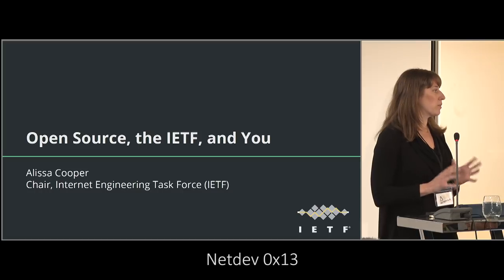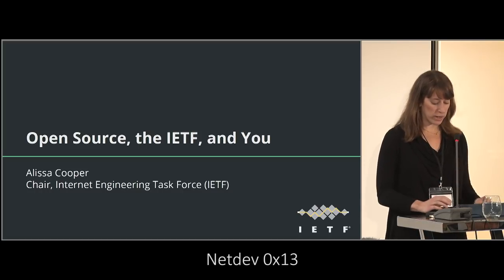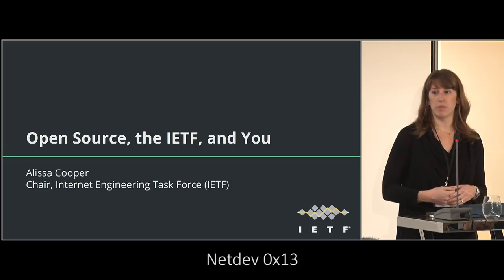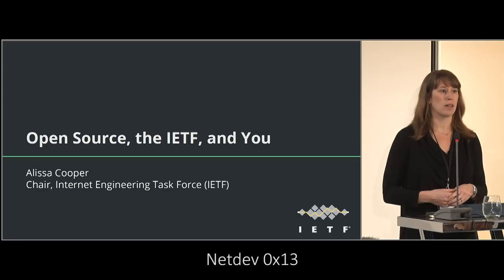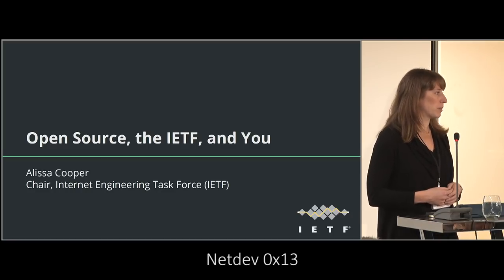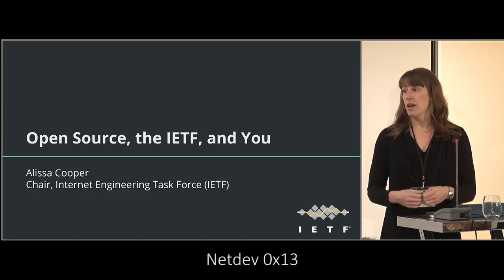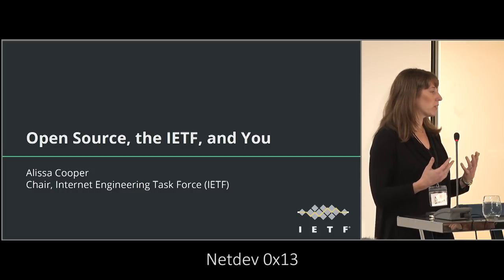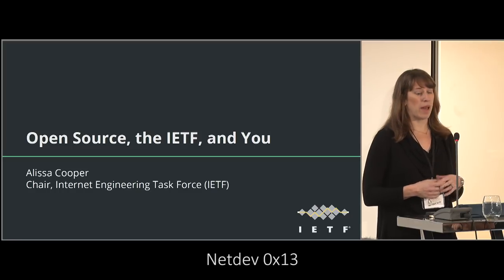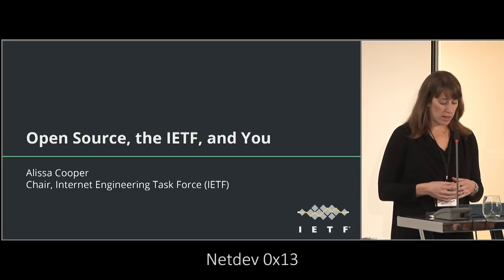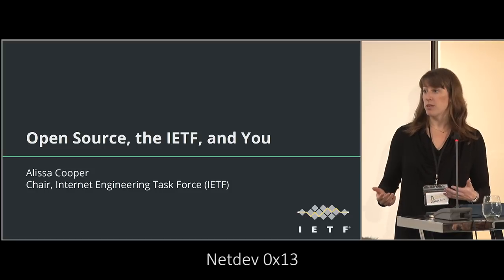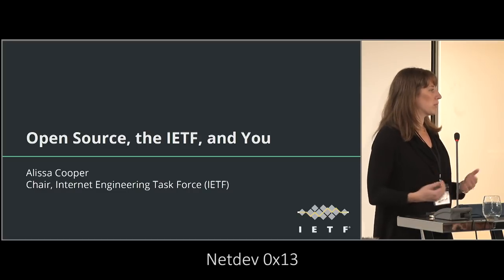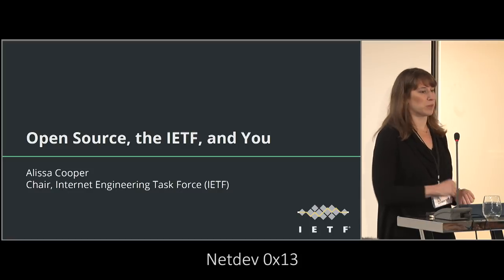On the internet today, we have many different models for how open source and open standards work together, coexist, and are developed together. Sometimes you get an implementation first and then people contribute that idea to the IETF, ending up standardizing a very similar design. Sometimes we develop a standard first and implementations come later. And increasingly, what we're seeing is parallel co-development of standards and implementations at the same time among the same people. There's no single model that's the right one — it depends on the specific technology, which part of the stack, and what we're trying to achieve.